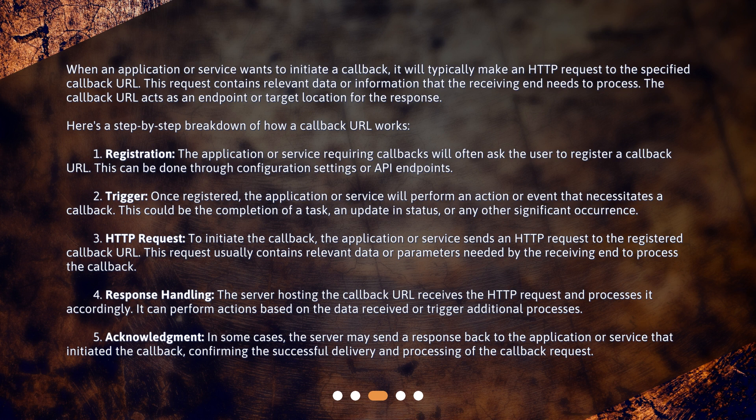Step 3: HTTP request. To initiate the callback, the application or service sends an HTTP request to the registered callback URL. This request usually contains relevant data or parameters needed by the receiving end to process the callback. Step 4: Response handling. The server hosting the callback URL receives the HTTP request and processes it accordingly. It can perform actions based on the data received or trigger additional processes. Step 5: Acknowledgement. In some cases, the server may send a response back to the application or service that initiated the callback, confirming the successful delivery and processing of the callback request.